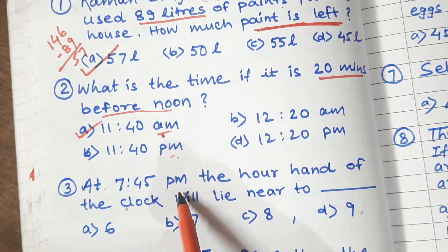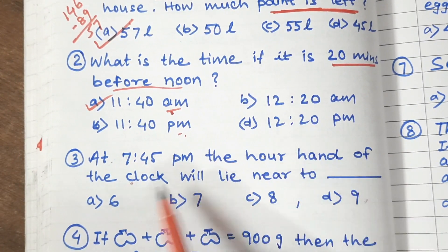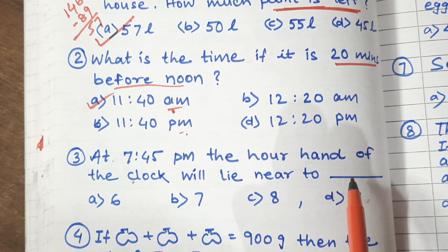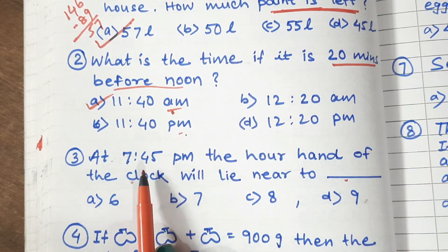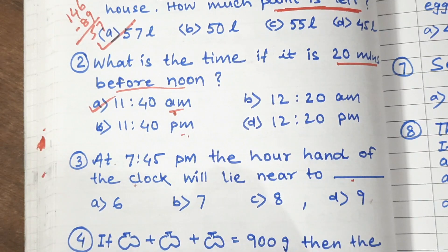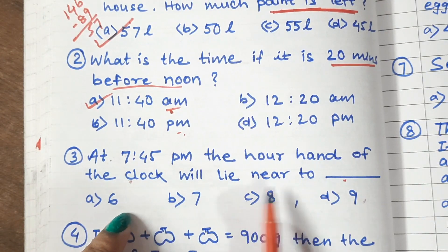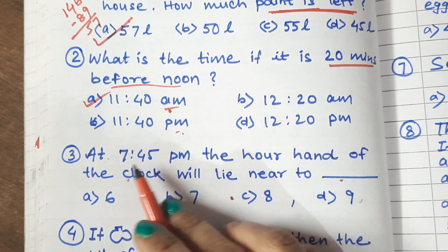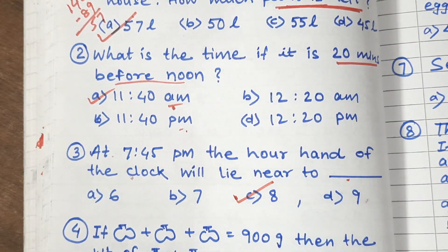Question 3: At 7:45 pm, the hour hand of the clock will lie near to dash. Now, if it is 7:45 time. Then where will the hour hand of the clock? Where will it be? Which number will it be? So 7:45, that is 8. So it will be 8.